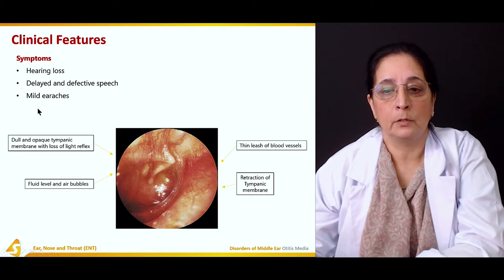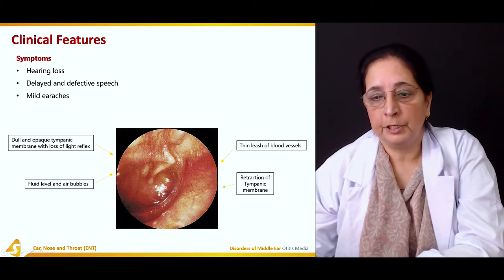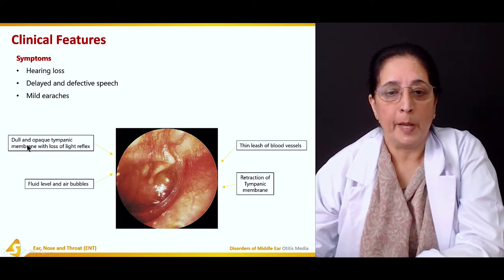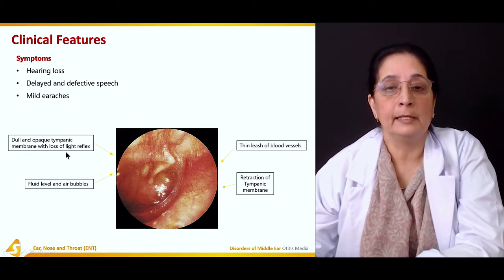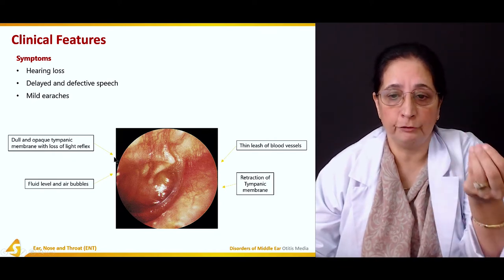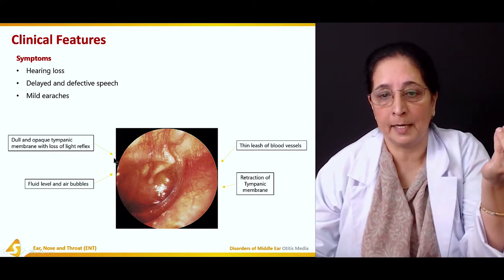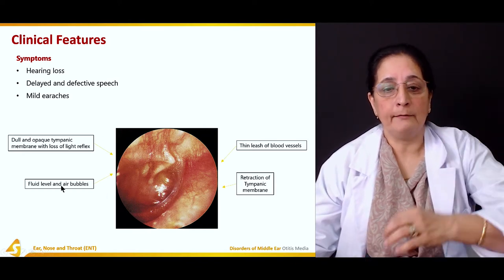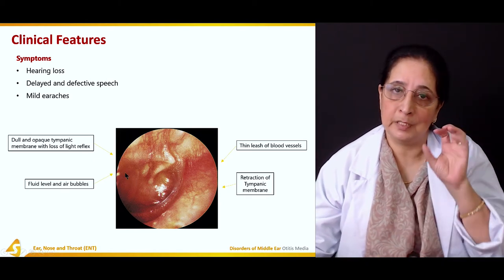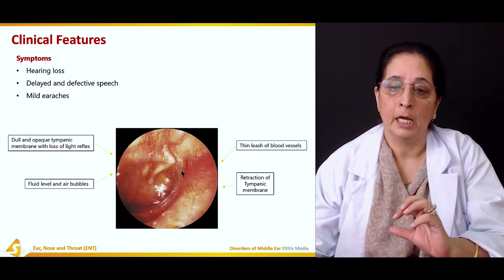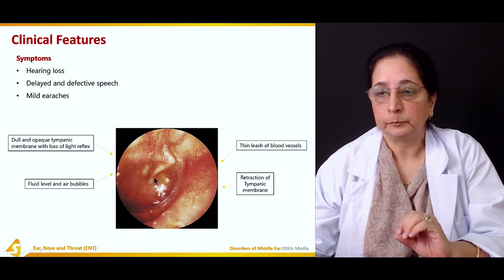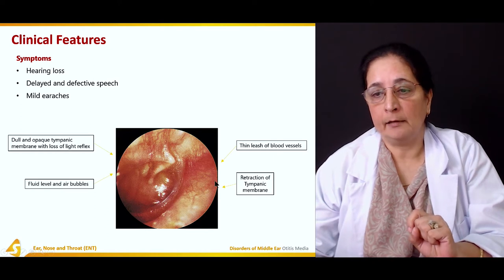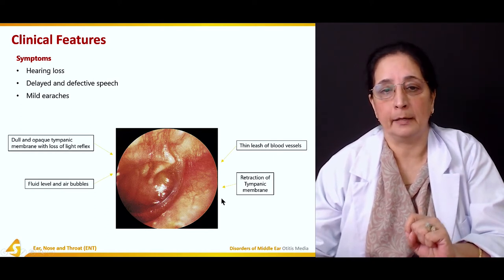On examination, there is a dull and opaque tympanic membrane with loss of the light reflex. There is effusion visible behind the tympanic membrane, with fluid levels and air bubbles present. Viewing through the tympanic membrane you can see fluid levels, a thin leash of blood vessels, and retraction of the tympanic membrane.